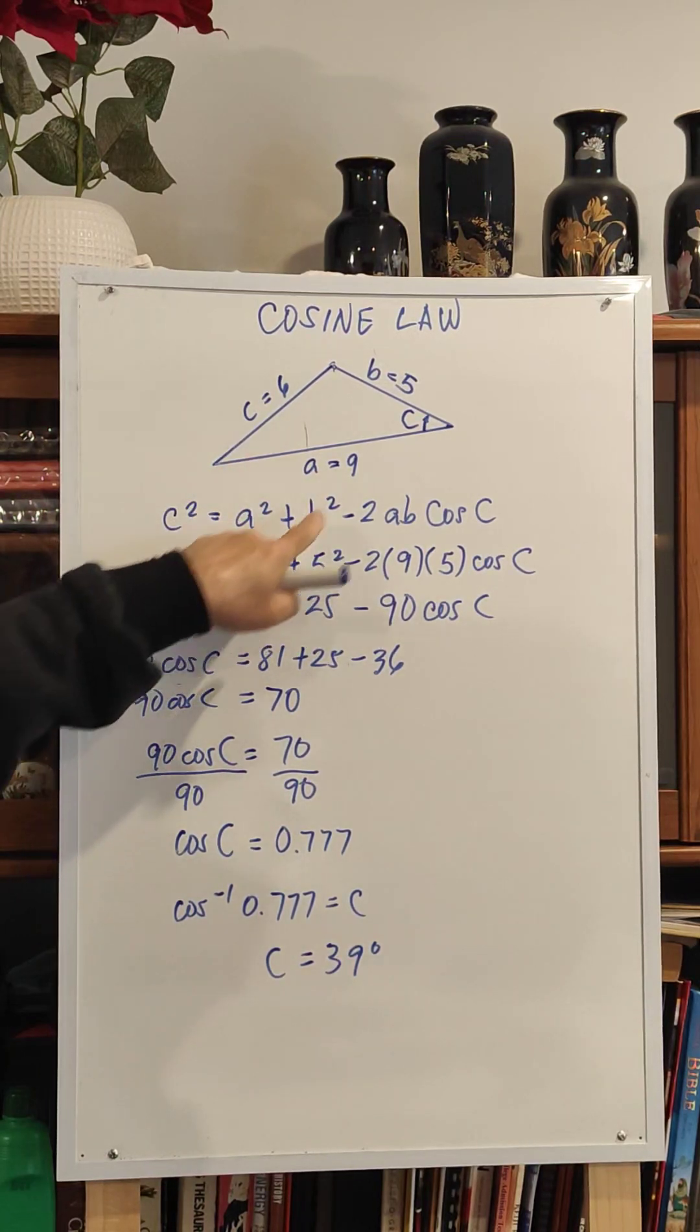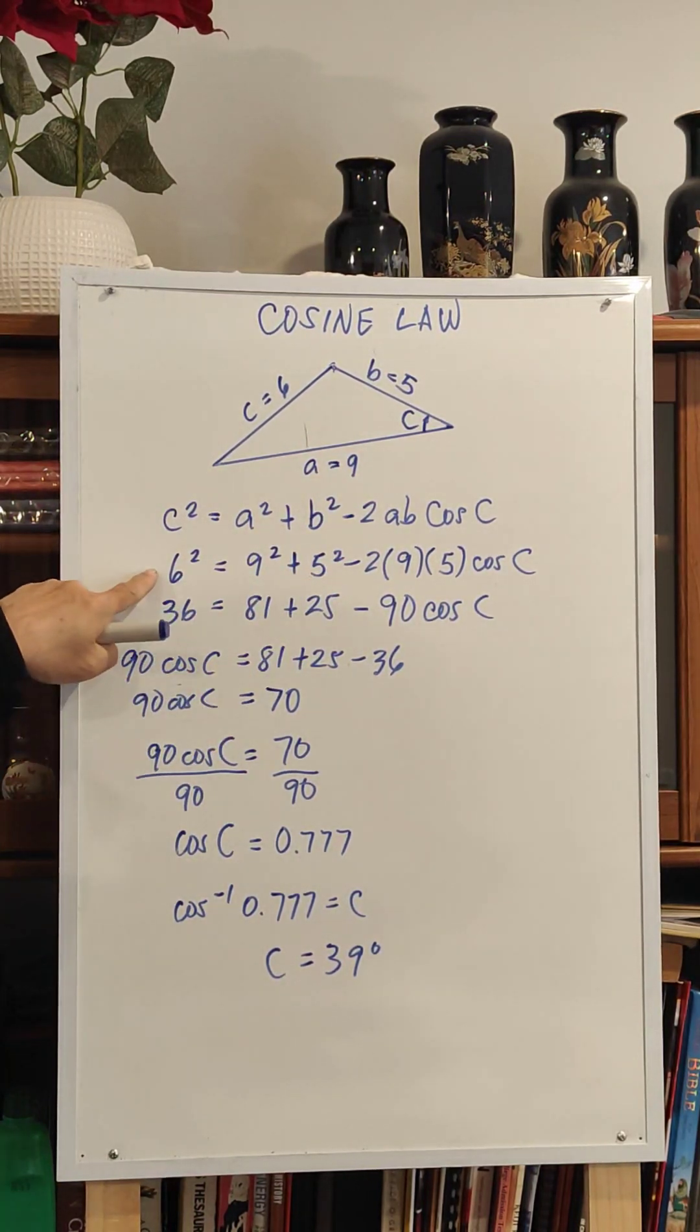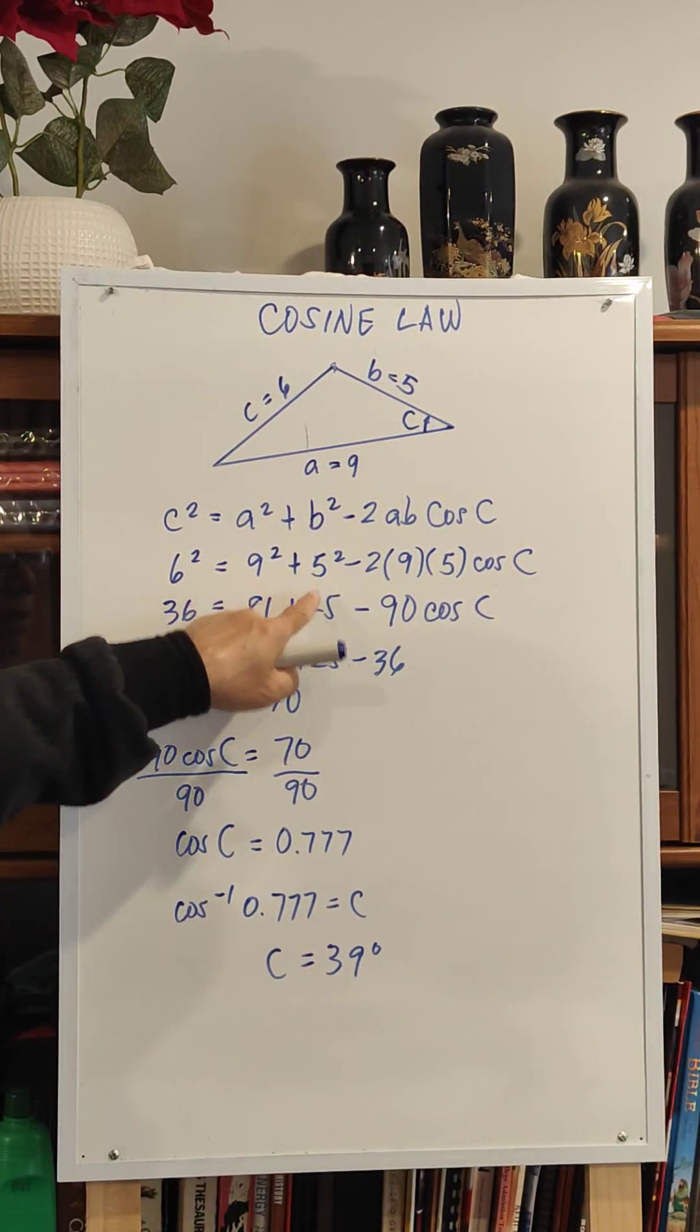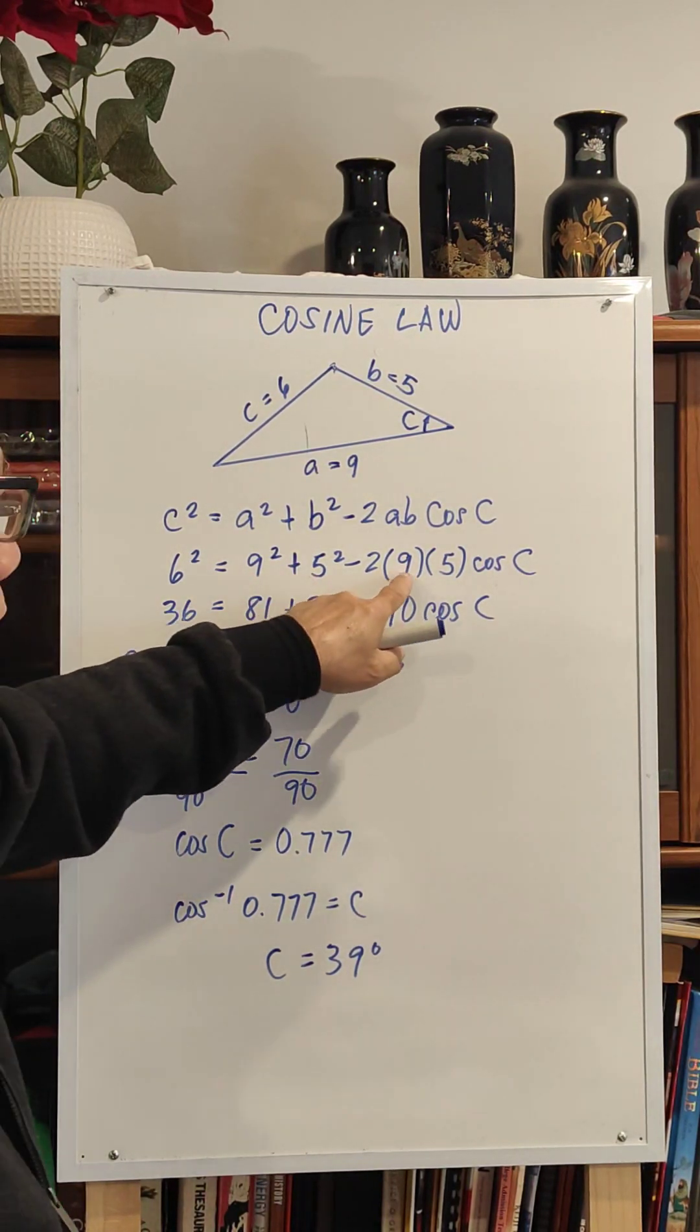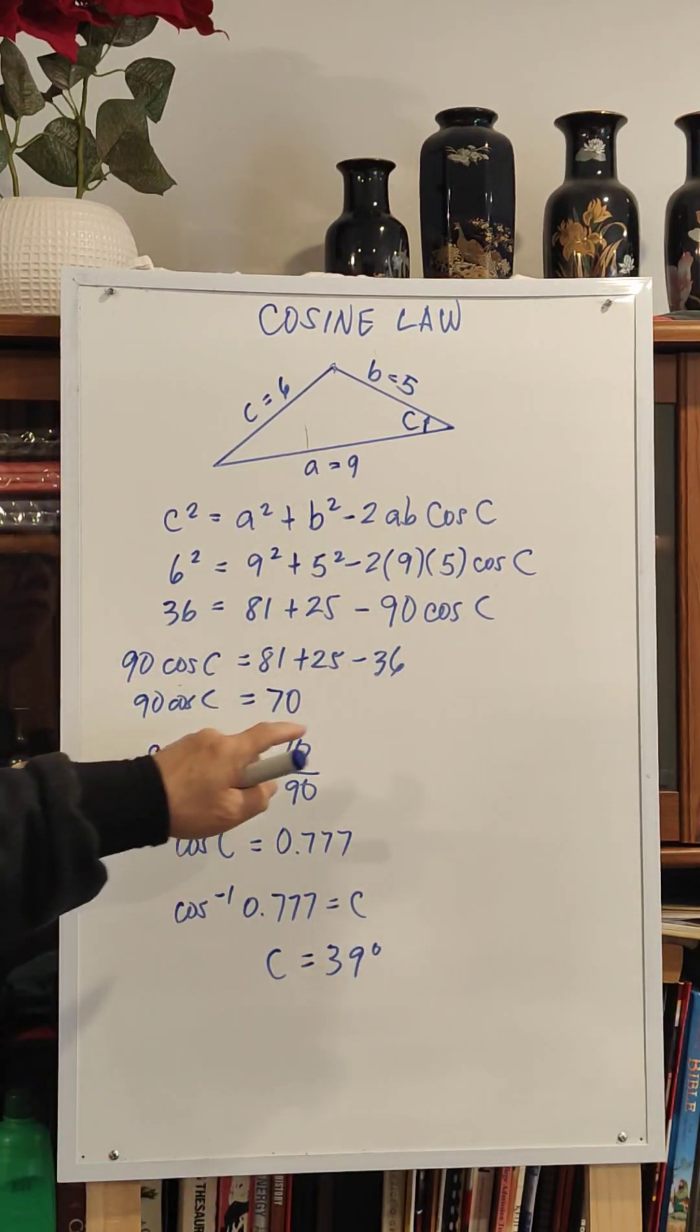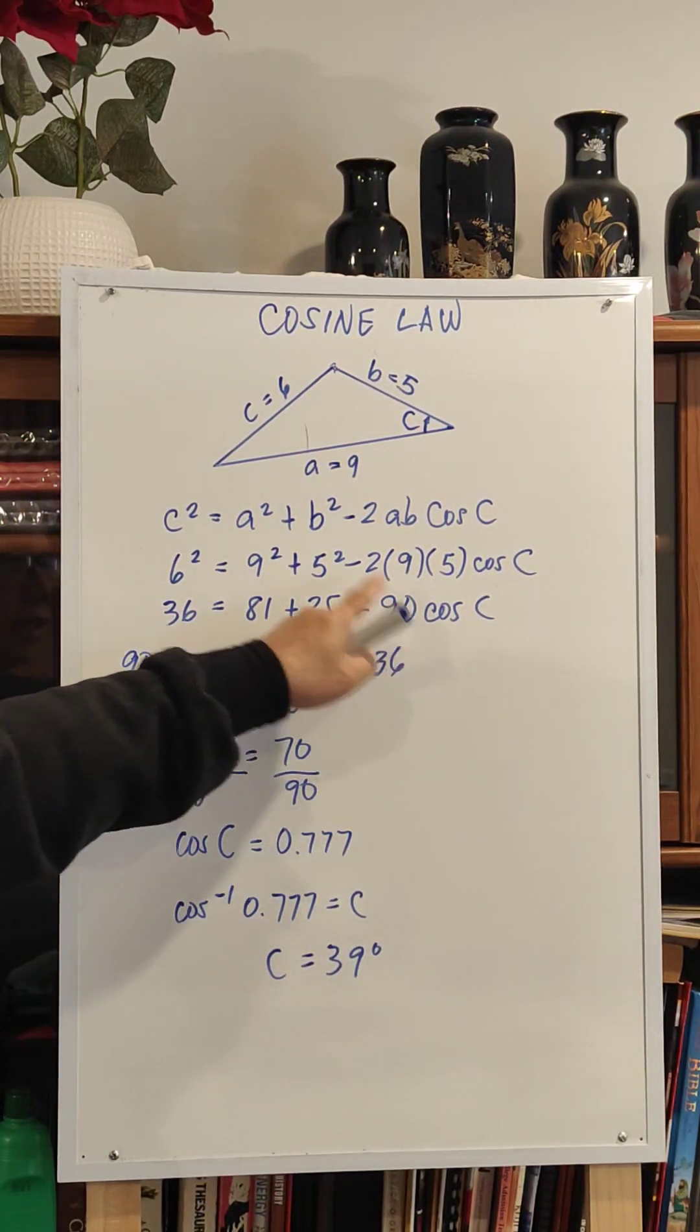So 6 squared is 36, 9 squared is 81, 5 squared is 25. 2 times 9 times 5 is 90 cosine C. If we can transpose this to the left side and this one to the right side.